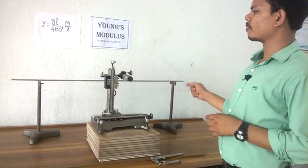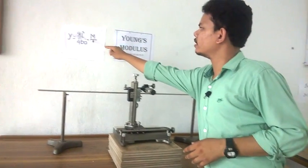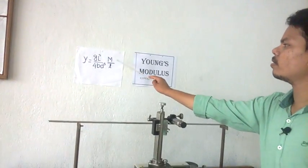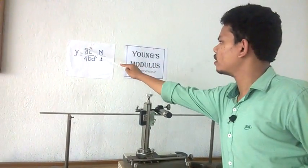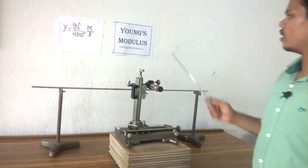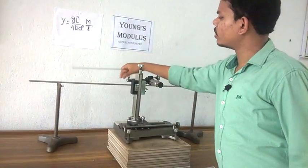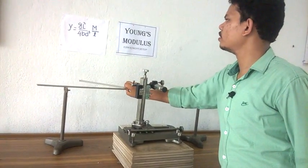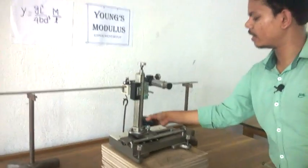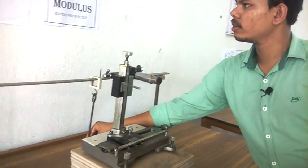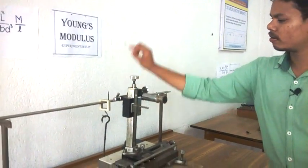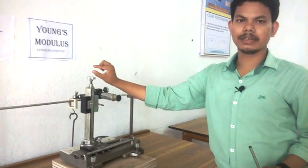So for a beam or cantilever, this is the general equation or working formula: Y equals 4L³mg divided by bd³δ. In our equation, g is gravitational acceleration, that is 9.8 meter per second squared. L is the length, b is the breadth of this beam, d is the depth of this beam, and δ is depression. If we apply mass m and load mg, then this beam bends or goes downward with a slight difference.